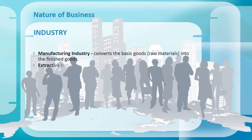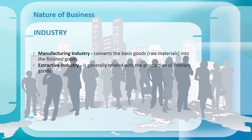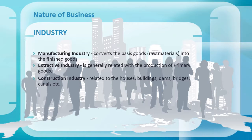Extractive industry is generally related with the production of primary goods. These industries are associated with agriculture, pastures, mining, and fishing. These industries produce primary goods which are used in manufacturing industry as raw materials. These industries get the goods from the surface, beneath the surface, and in the space.